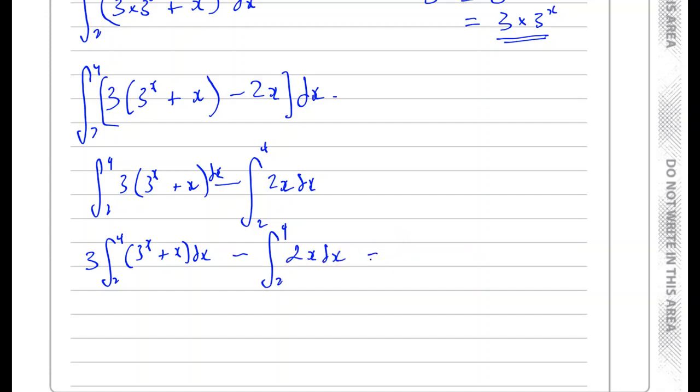So this will give me 3 times 72.6. I know that the value of this is 72.6, so 3 times that minus, now I've got to integrate 2x with respect to x and then substitute 4 and 2 in there.